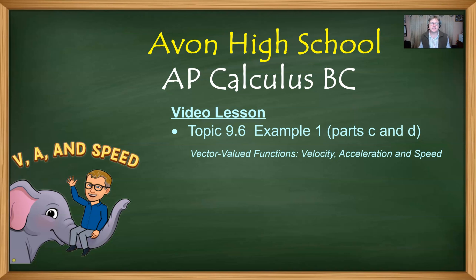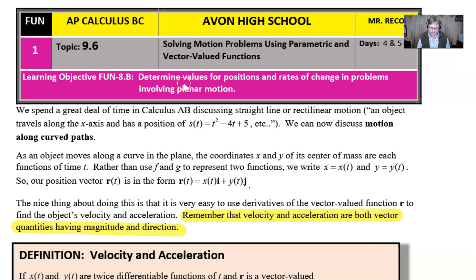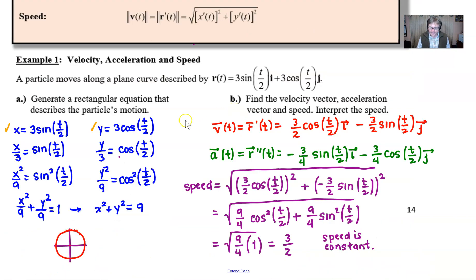Greetings AP Calc BC students. Going to take a look at our second half of example one. If you tuned in earlier you saw parts A and B. We're going to finish it off now. So if we take a look at what we did in parts A and B, we developed this equation for this vector value function. This is x squared plus y squared equal 9, a circle with radius 3.